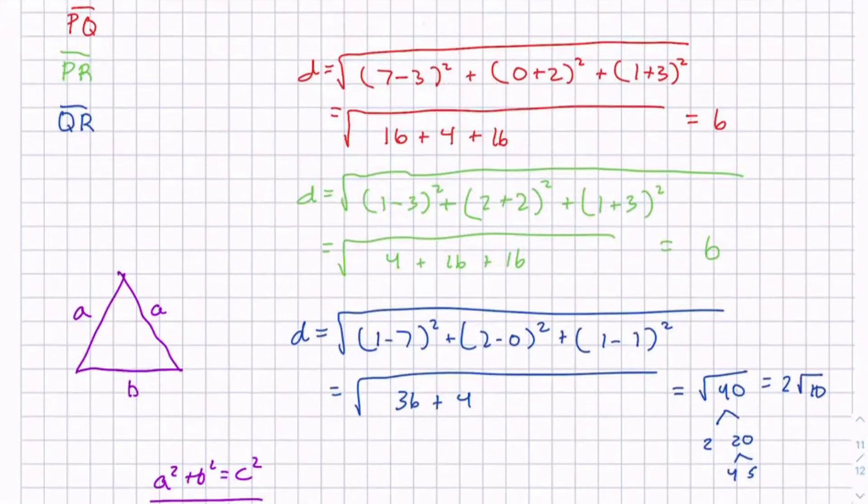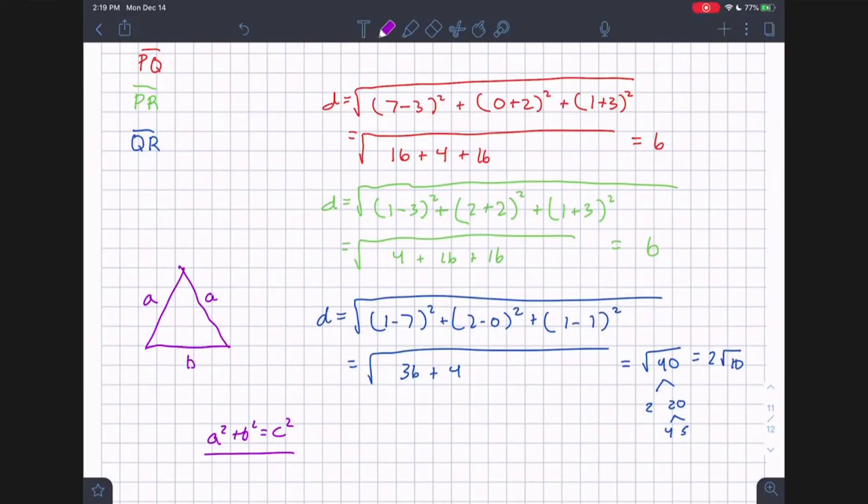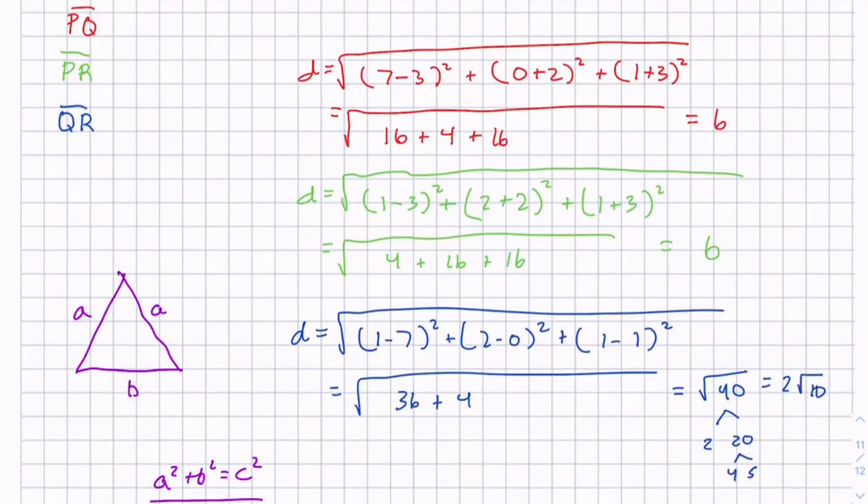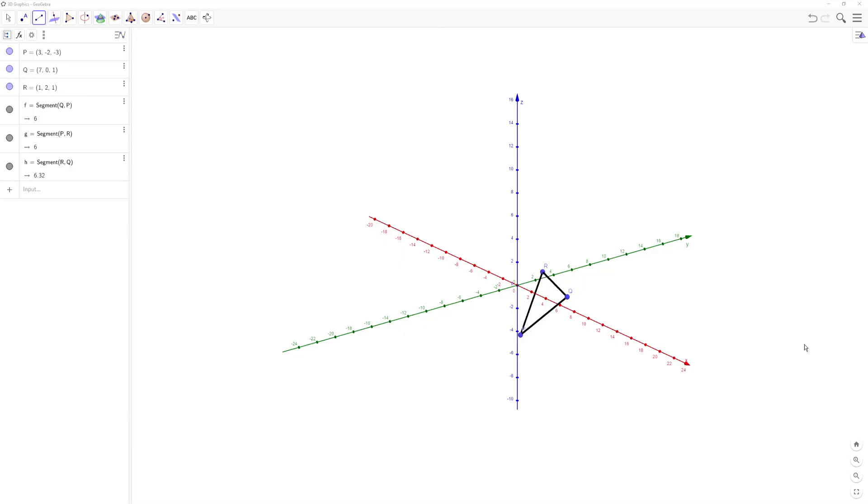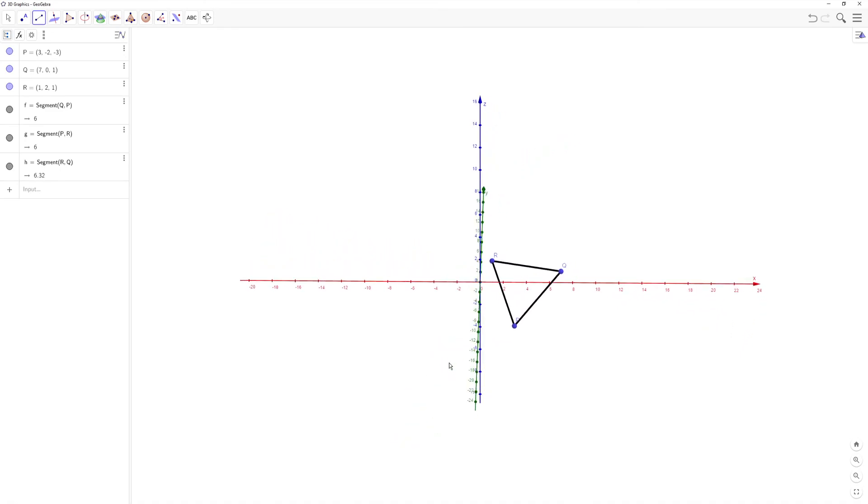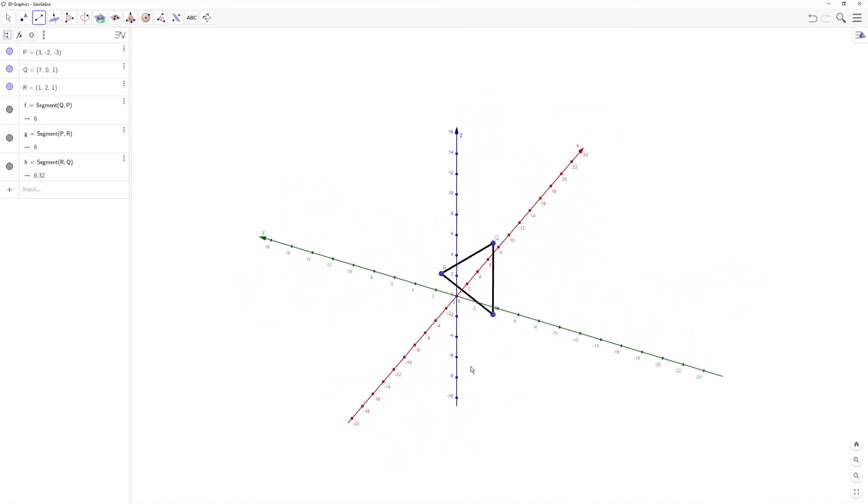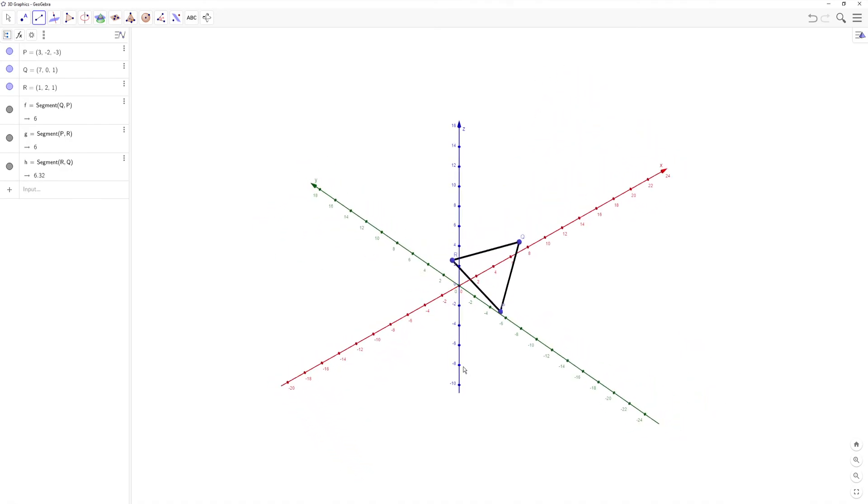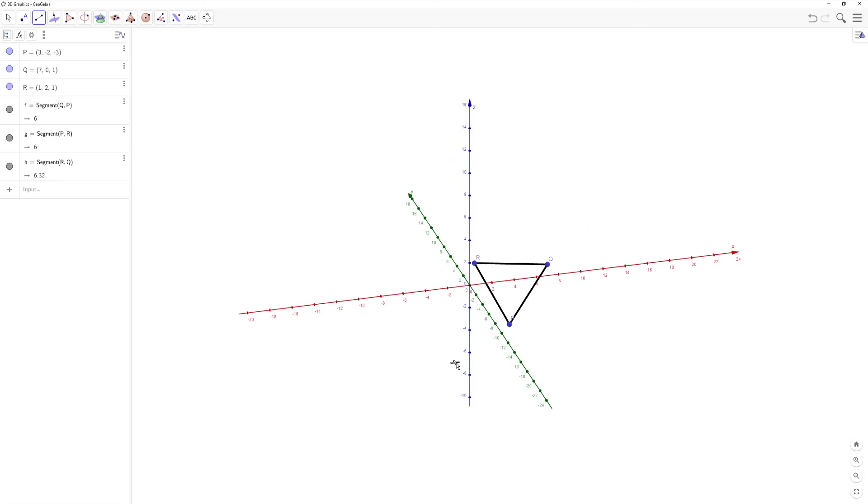Just to show you visually that this is an isosceles triangle, let me take you to the graph. As you can see, I plotted P, Q, and R forming this triangle. If we orient it the right way, you can see it's an isosceles triangle and nowhere close to a right triangle.